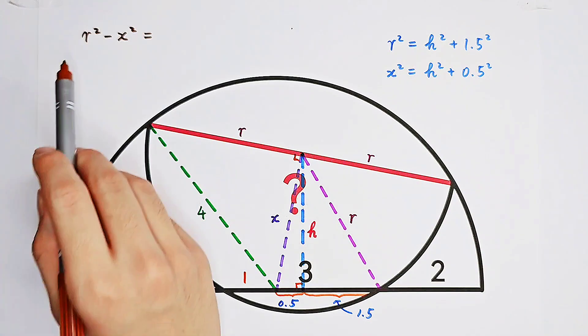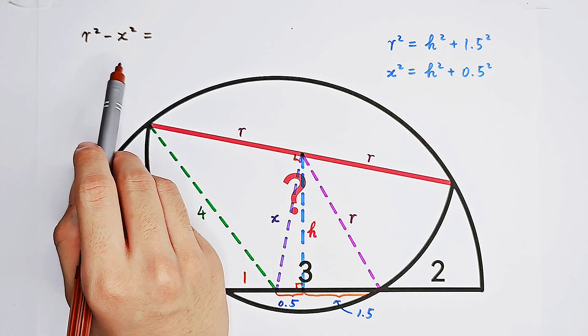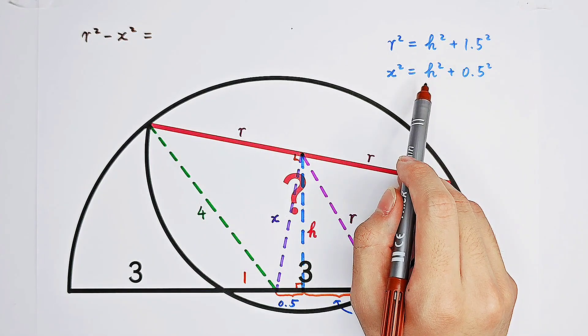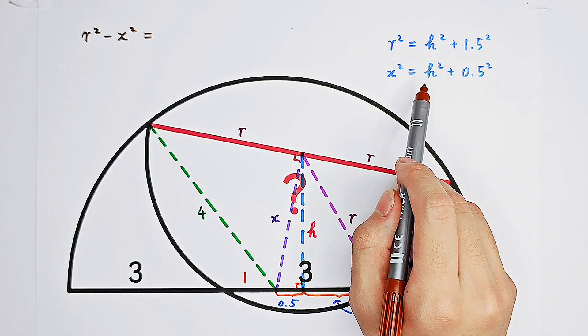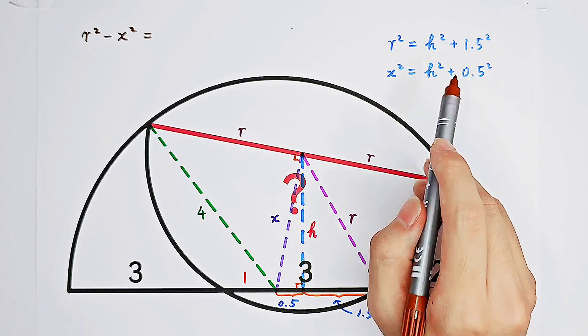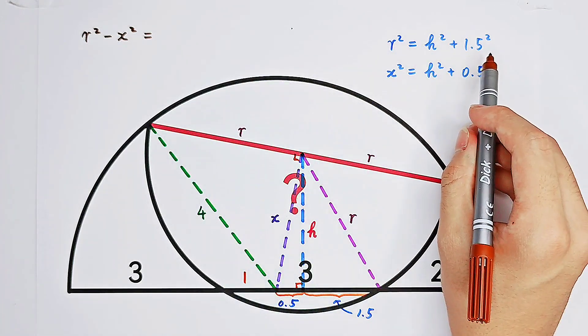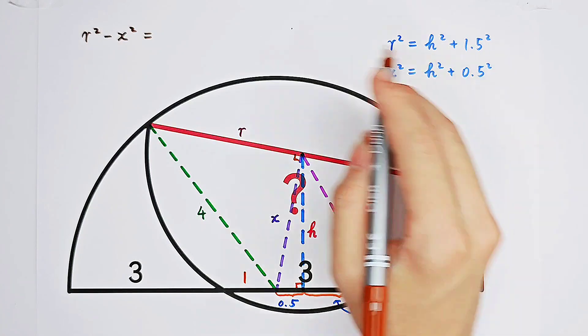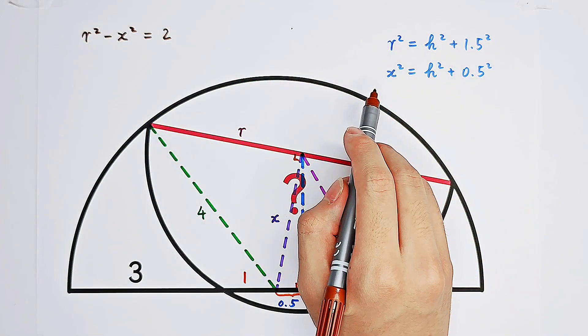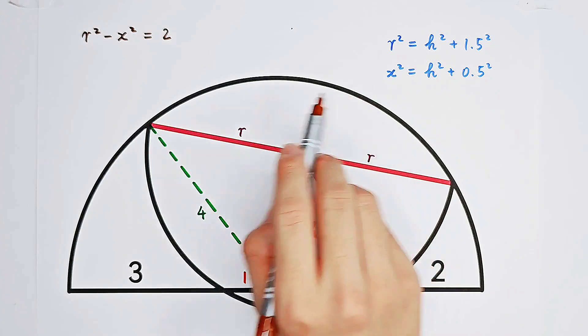So what we can do is to subtract the second one from the first one. Then, so we have R squared minus X squared equals H squared minus H squared is zero. So H doesn't exist anymore. 1.5 squared minus 0.5 squared is 2.25 minus 0.25 is 2. So from these two equations, we can get a clear relationship between R and X.